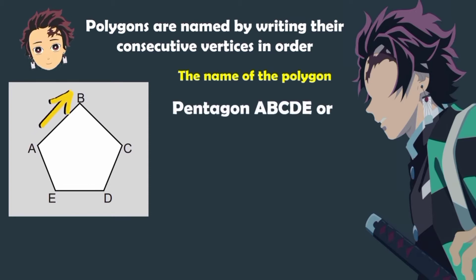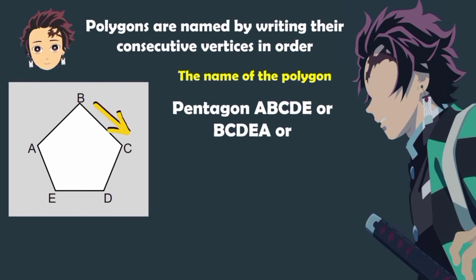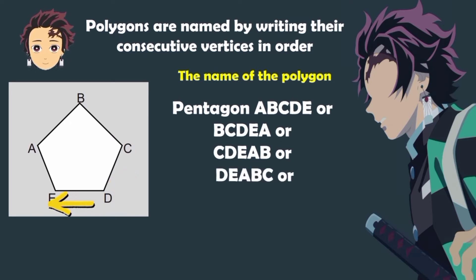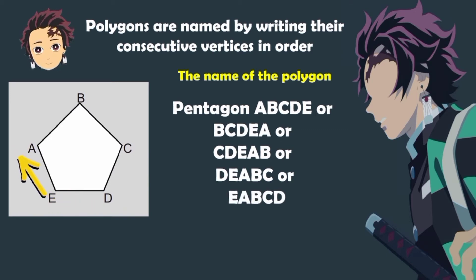Pentagon A, B, C, D, E — or Pentagon B, C, D, E, A — or Pentagon C, D, E, A, B — or Pentagon D, E, A, B, C — or it can be Pentagon E, A, B, C, D.